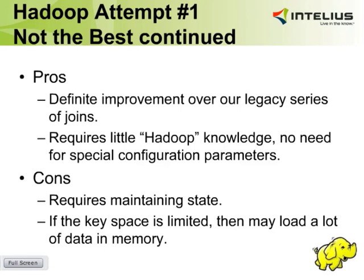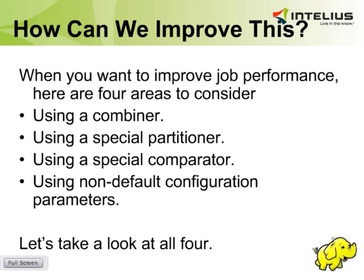The dream and goal is to have a process you won't need to rewrite later if you suddenly have 100 times as much data. So how can we improve this? There are four areas that are good targets whenever you're looking at a process and deciding how to make it faster: you could use a combiner, a special partitioner, a special comparator, or non-default configuration parameters. These are roughly in order of where you might want to look first, as the combiner, partitioners, and comparators really speak to how you might rethink how you're doing it.